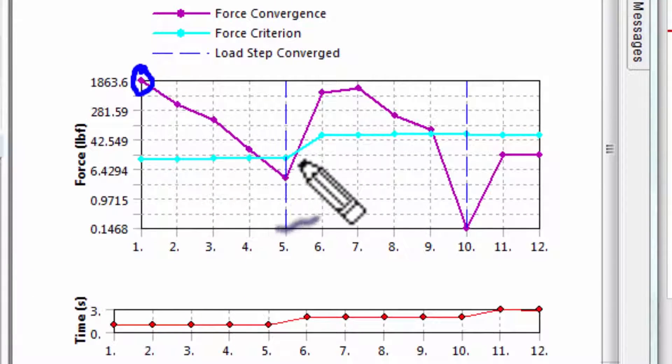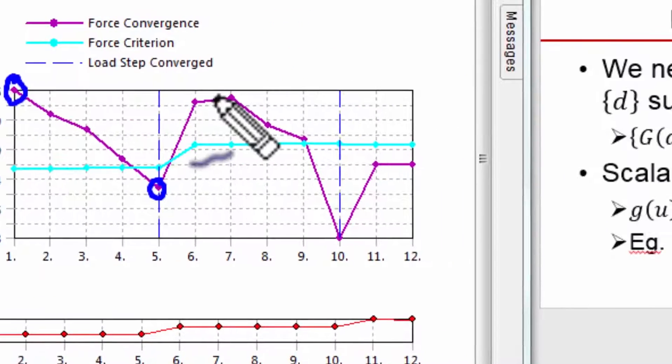The first load step has converged. At this point I have a reasonably good solution to the set of nonlinear algebraic equations for the first load step. I have a good solution to what the deformations and stresses are when I tighten the bolt, tighten the nut to whatever preload I've given it.